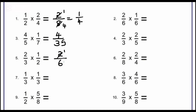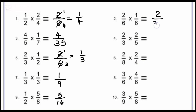The next question involves 2/3; after cancelling we get 1 in the numerator and 3 in the denominator, so the answer is 1/3. Another example is 1/2 × 5/8, which gives 5 in the numerator and 16 in the denominator, so 5/16. The next question gives 2/36; after simplifying by dividing by 2 we get 1/18.